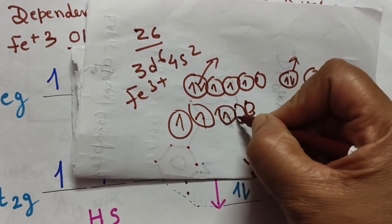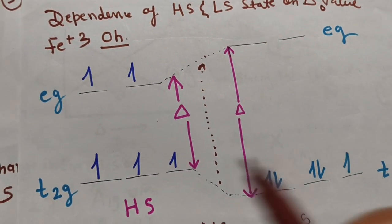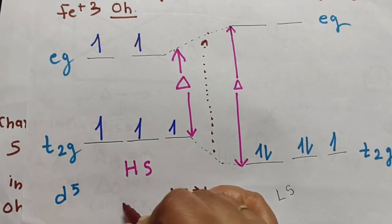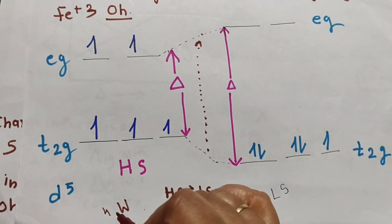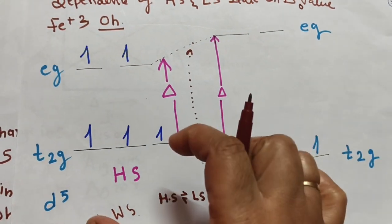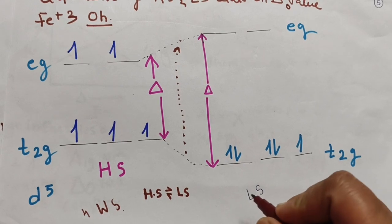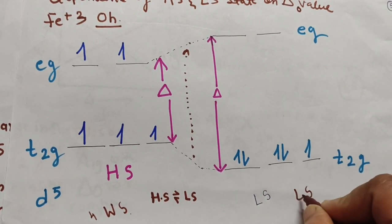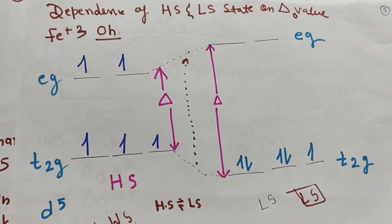If the ligand is a weak field ligand, the complex will prefer high spin. A memory trick: weak field ligand gives high spin — remember 'WH' for Weak-High, like homework. Strong field ligands cause electron pairing, giving low spin complexes — remember 'LS' for Low Spin with Strong field ligands.